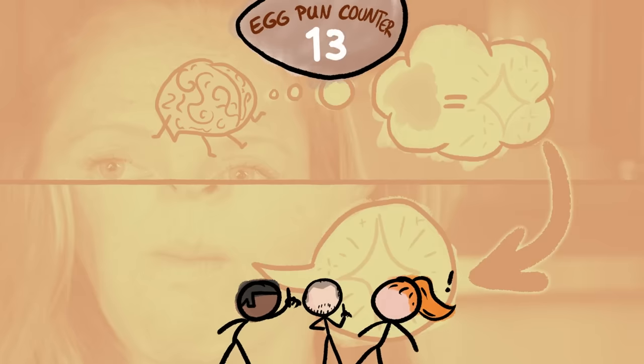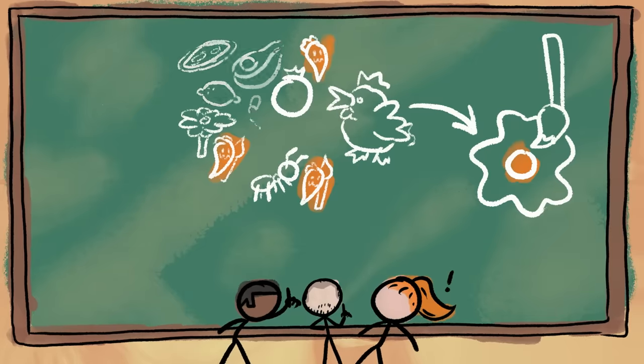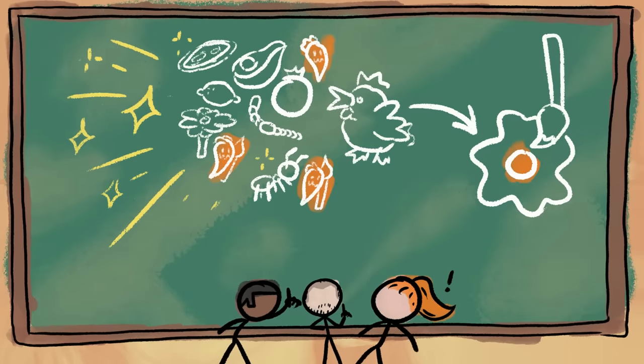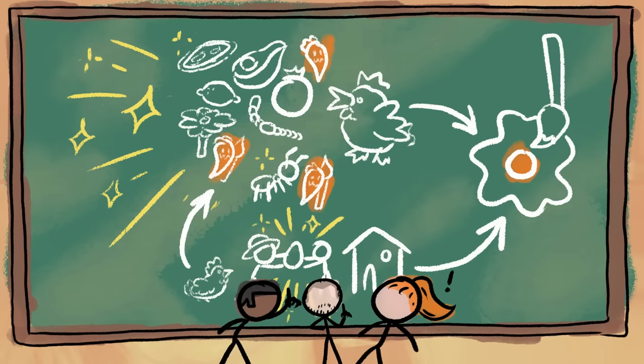But wait, you might be saying, as my egg-ceptionally astute husband did. Maybe chickens that eat more carotenoids have a more varied diet overall, and that makes their eggs taste better. And maybe better-fed chickens are more likely to be local, so the eggs are fresher and tastier when they get to you.